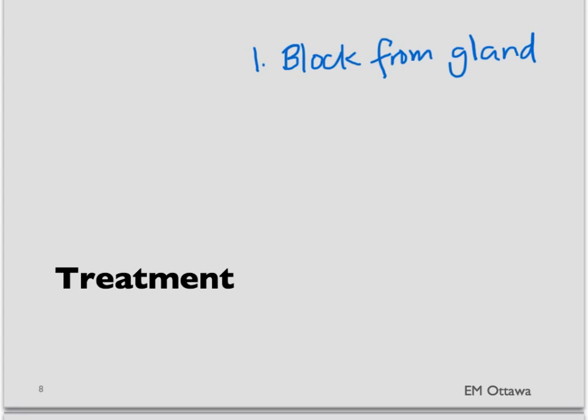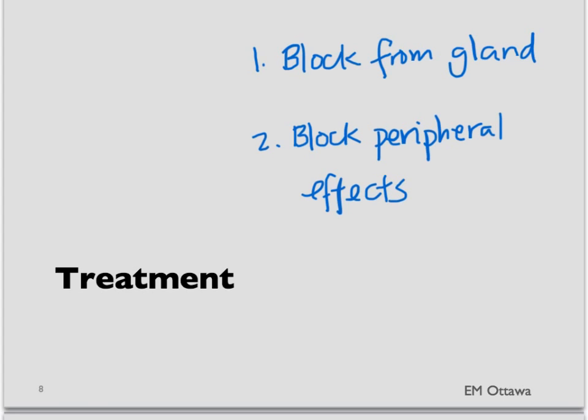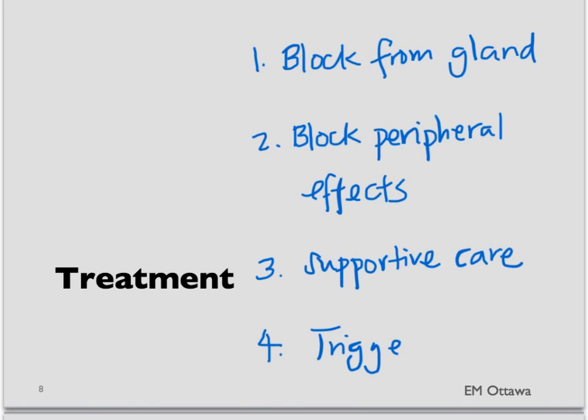Let's talk about the different kinds of treatment. Treatment is divided into four different components. First, we block the hormone from the thyroid gland. Second, we block the peripheral effects of the hormone. Thirdly, we give supportive care to the patient, ensuring the ABCs are addressed. And fourthly, we look for that trigger and we treat it.